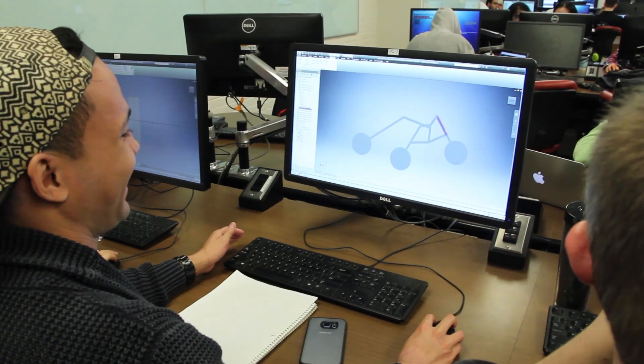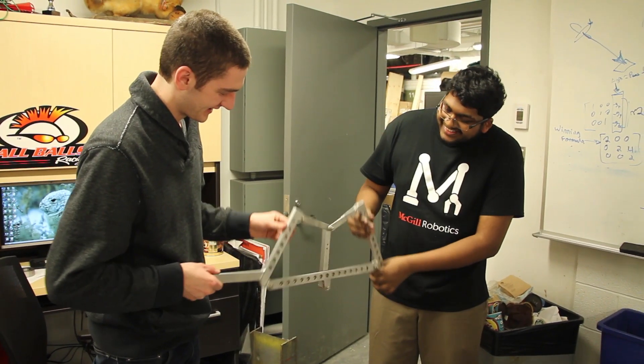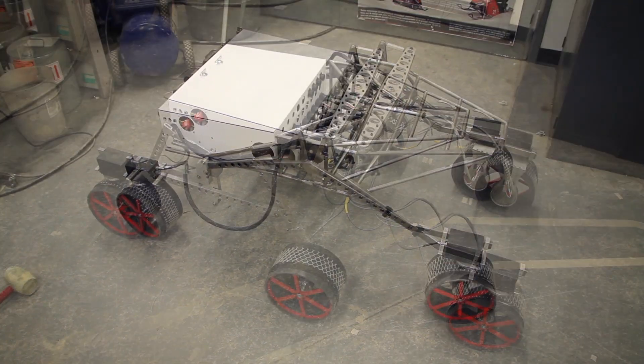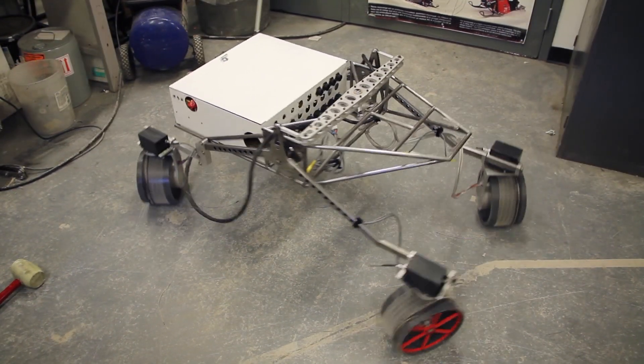Next, the suspension. The double lambda rocker wheel worked well for us last year, so we've made it lighter, stronger and even more modular. We can now switch between six-wheel and four-wheel drive in a matter of seconds.